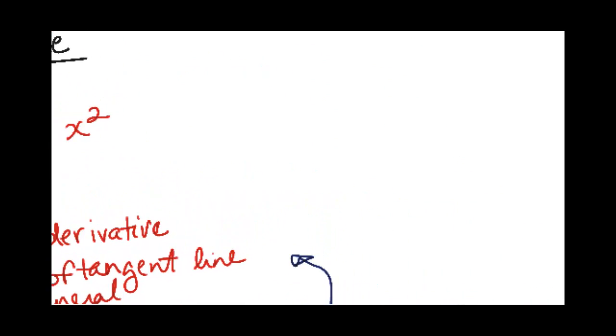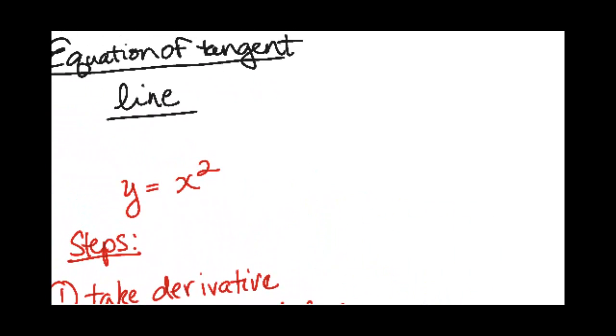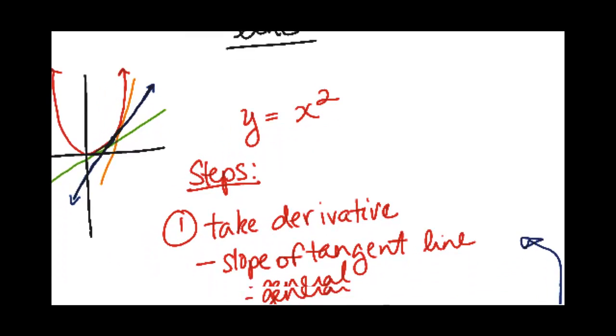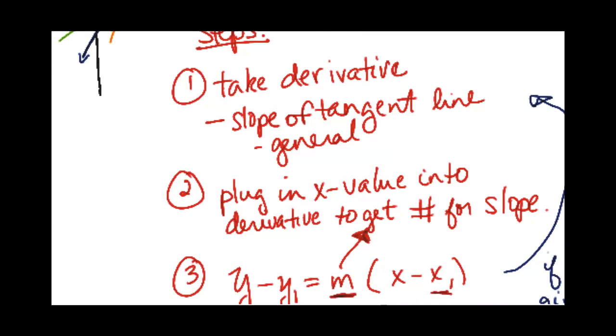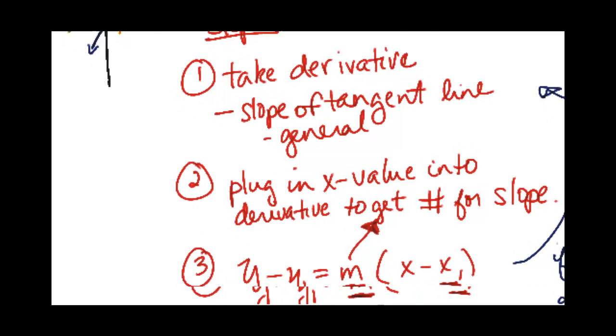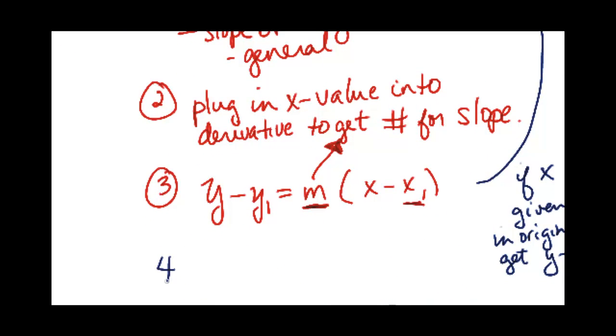And that's basically it. So make sure you check out the example video for an equation of the tangent line. Again, recapping: take the derivative, plug in the X value, plug into the equation. I guess step four would be to solve for Y, put it in the slope intercept form.